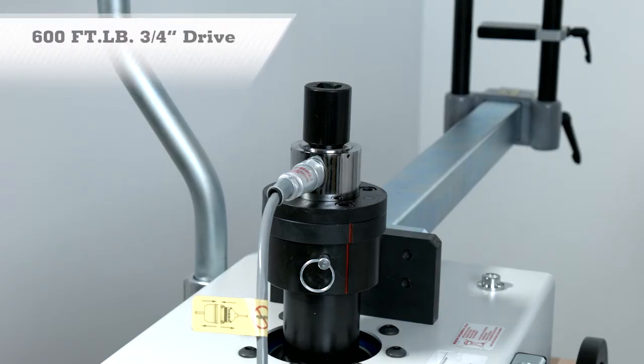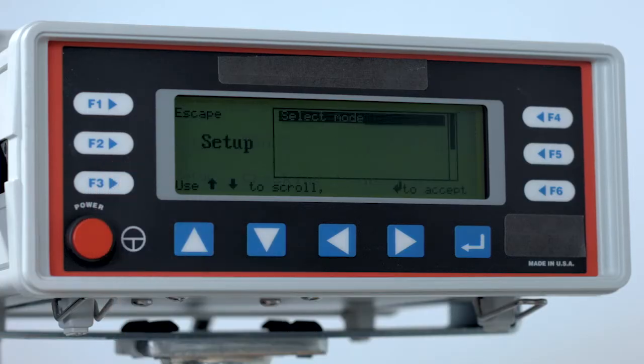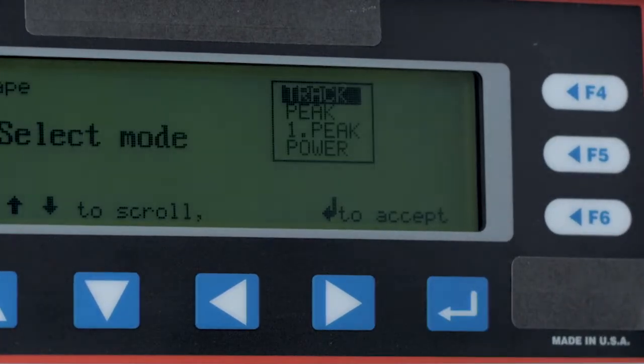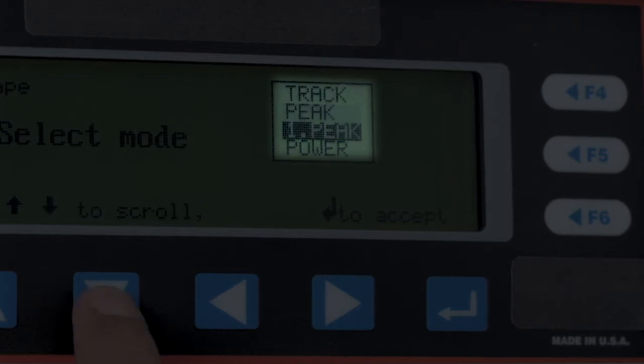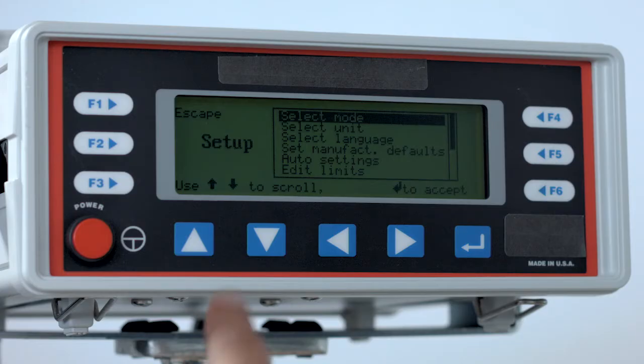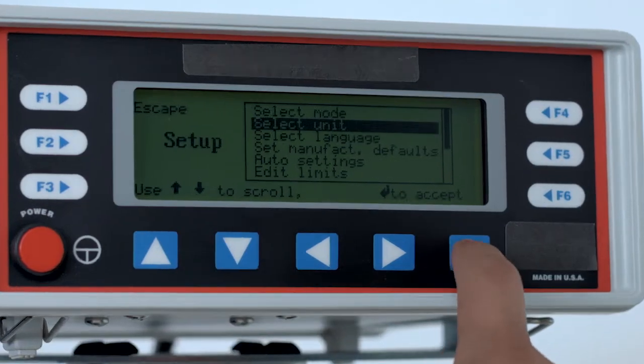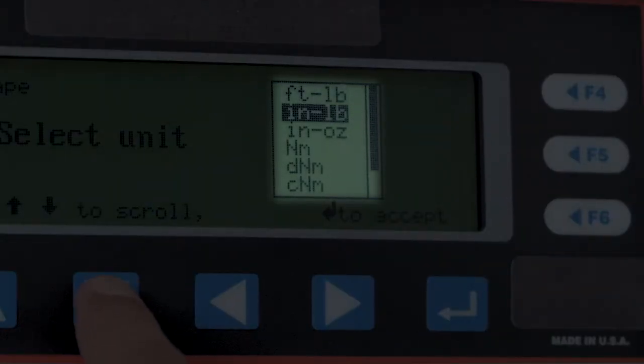A separate 600-foot-pound, three-quarter-inch drive transducer is also included in the system. There are four operating modes to choose from: track, peak, first peak, and power tool. The monitor can easily be changed between eight different units of torque, including the most popular foot-pounds, inch-pounds, and newton-meters.